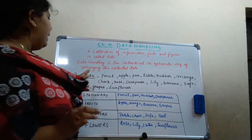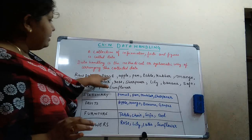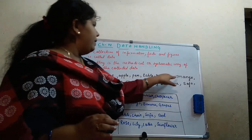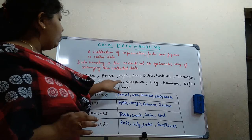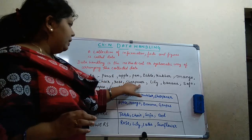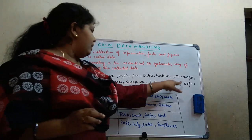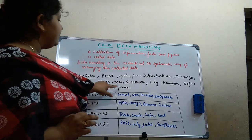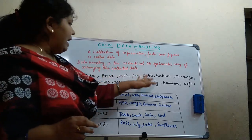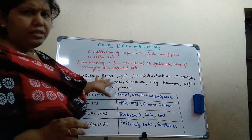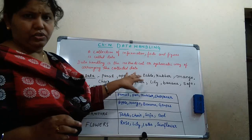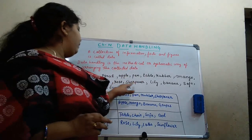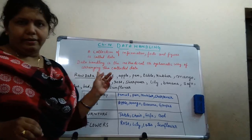For example, I have taken here: pencil, apple, pen, table, rubber, mango, chair, rose, sharpener, lily, banana, sofa, lotus, bed, grape, sunflower. So these are data — are they arranged? They are not arranged. They are unorganized. So we will call this type of data as raw data.